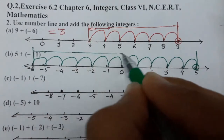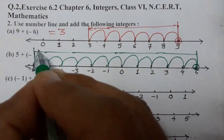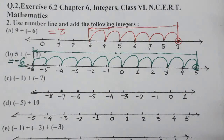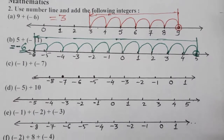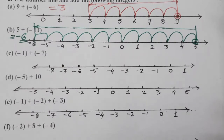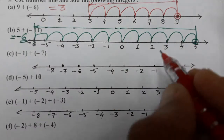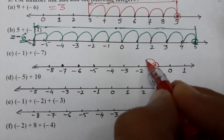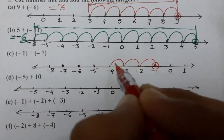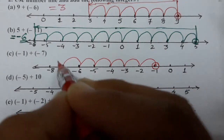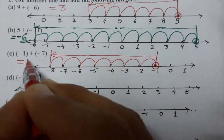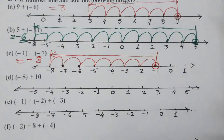Now let's do (c): (-1) + (-7). We start with minus 1. Again, minus 7 means we have to move towards the left — one, two, three, four, five, six, and seven — so we reach at minus 8. The answer is minus 8.